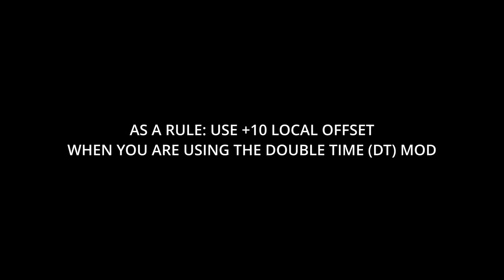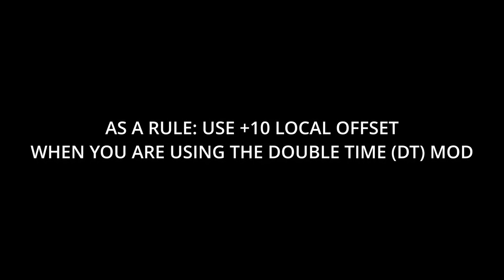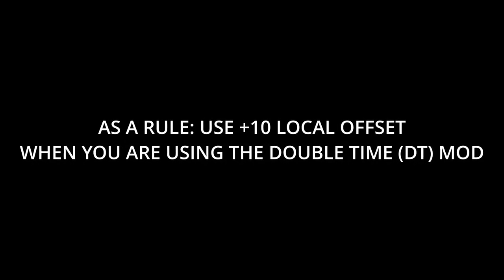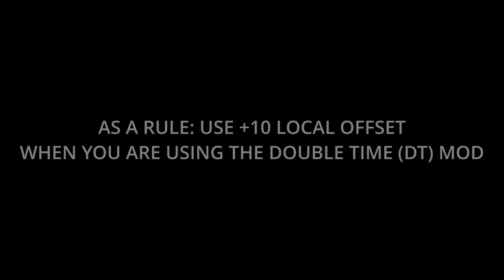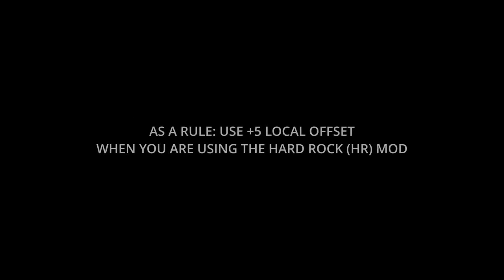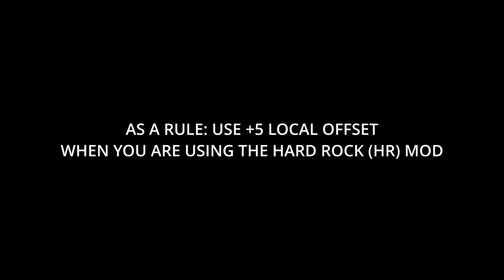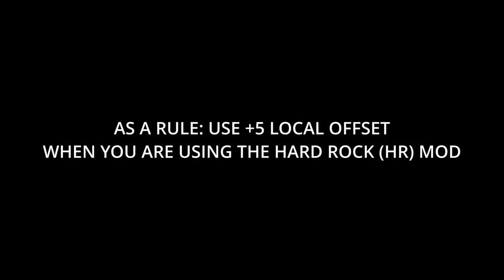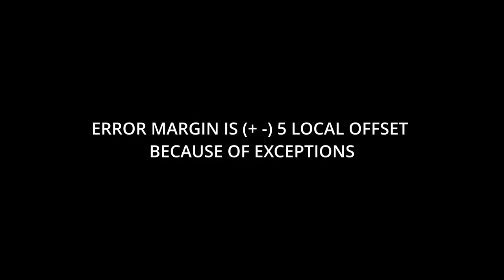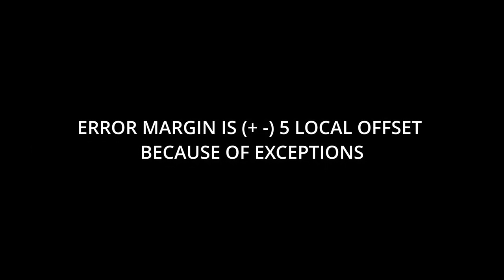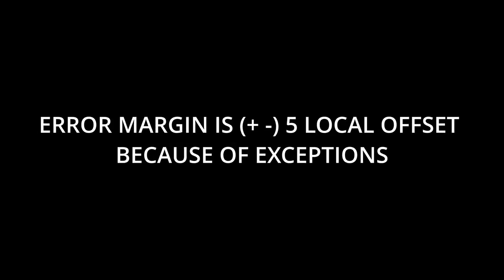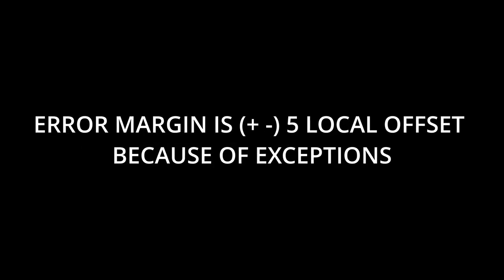As a rule of thumb, use plus 10 offset when you're using the Double Time mod (DT), and plus 5 offset if you're using the Hard Rock mod (HR), with an error margin of plus or minus 5 offset, as there are some exceptions to this. This will be explained later in the video.